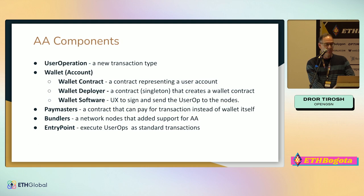Briefly, the components we have for account abstraction: first and foremost is the user operation — this is our transaction. The replacement for a transaction structure is a user operation. Then there's the wallet, the account, which is built from a contract. There's a second contract we call the deployer, which is the contract that deploys new contracts through the system.